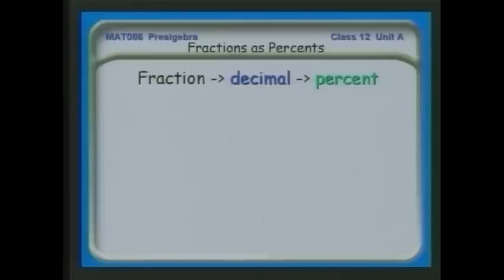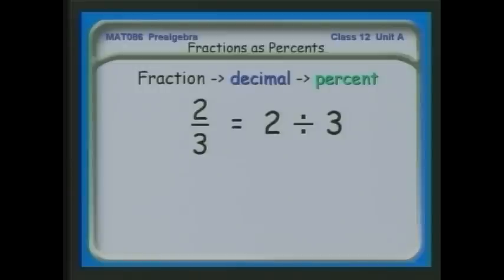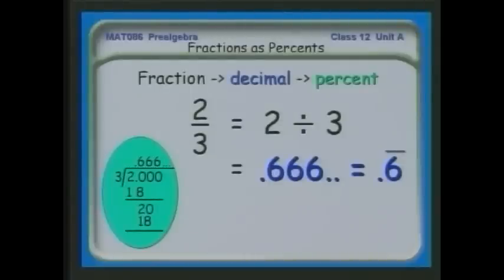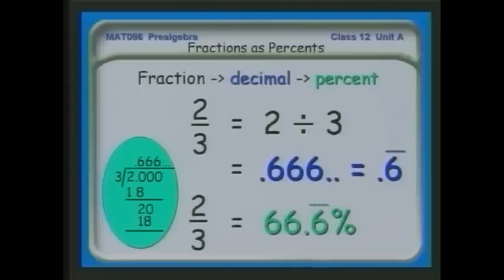Let's look at another example that is a tiny bit more involved. If we have the fraction two-thirds, we're talking about two divided by three. When we perform this division we find we get 0.666666... — one of those decimals that goes on forever. We can write that as 0.666 or 0.6-bar. Moving the decimal point two places to the right to convert to a percent, we can express two-thirds as 66.6666...%, or rounding to the nearest tenth, 66.7%.